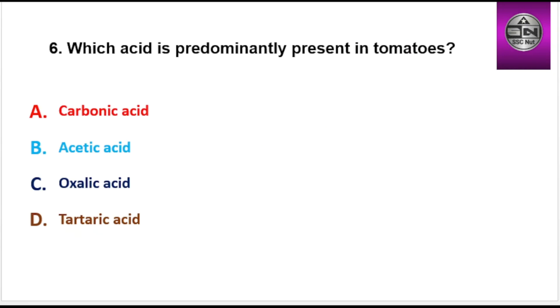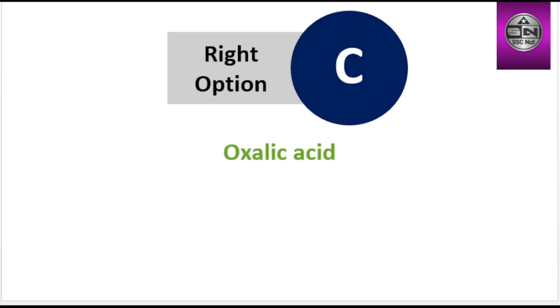Next question: Which acid is predominantly present in tomatoes? Options are Carbonic Acid, Acetic Acid, Oxalic Acid, Tartaric Acid. Right option is C: Oxalic Acid.